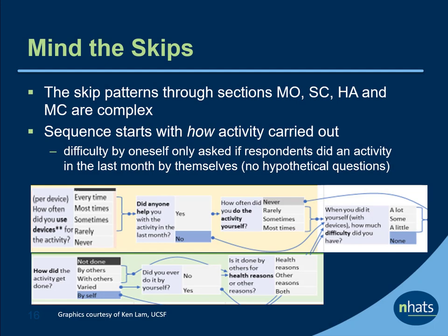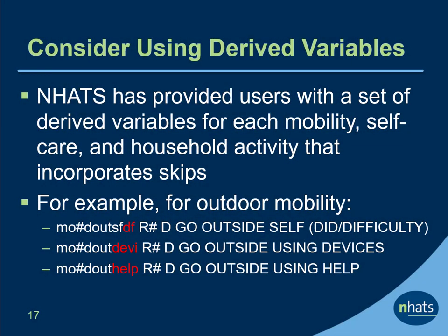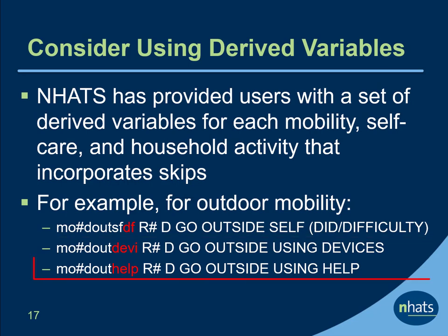When constructing variables to study disability, we recommend you pay careful attention to skip patterns. The skips are designed to route respondents through a tailored interview that will make sense for their particular situation. Note that most sequences start with how activities are carried out — that is, with devices or help — and follow-up questions about difficulty by oneself are only asked if a respondent performed the activity by themselves in the last month. Finally, consider using derived variables provided by NHATS. Users are provided with a set for each mobility, self-care, and household activity. For outdoor mobility, the first derived variable captures whether the respondent did the activity by themselves and if so, the difficulty level; the second captures the use of devices; and the third, the receipt of help.